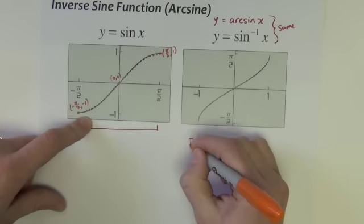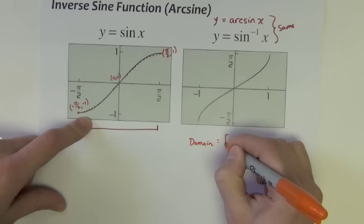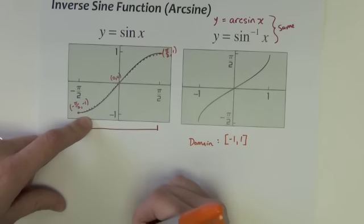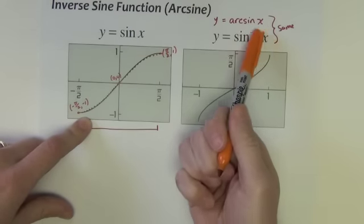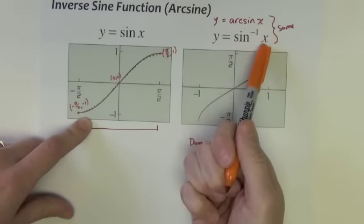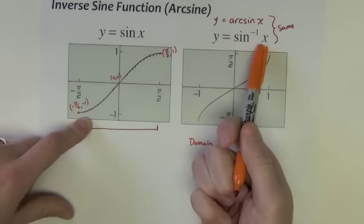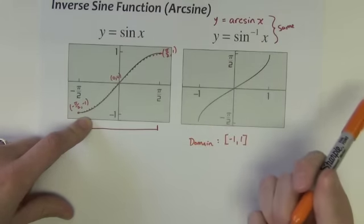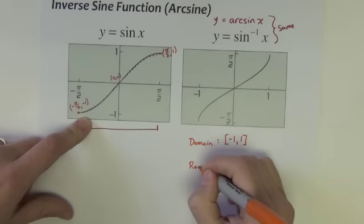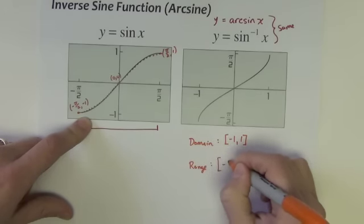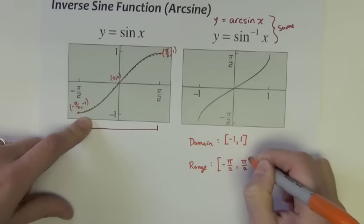Now, the domain of this graph is negative 1 to 1. So the inverse sine function can only take input that is between or including negative 1 and 1. So you couldn't do sine inverse of 2 or sine inverse of negative 3. Wouldn't work.